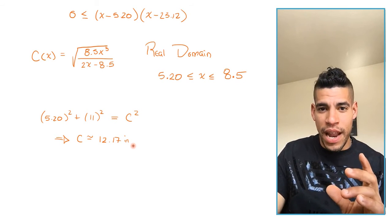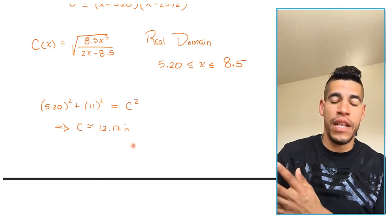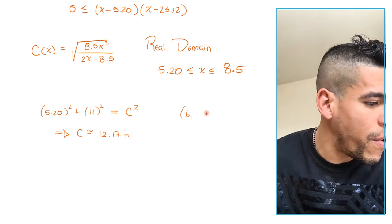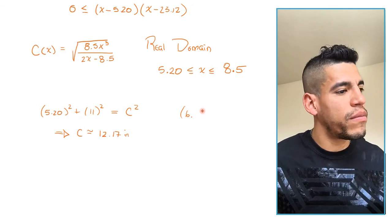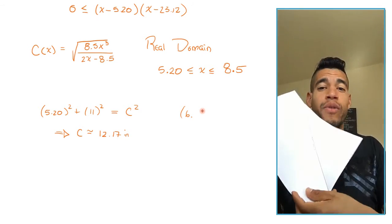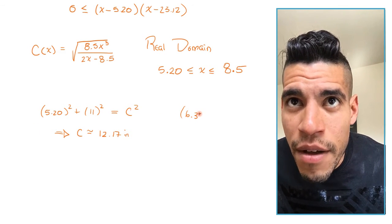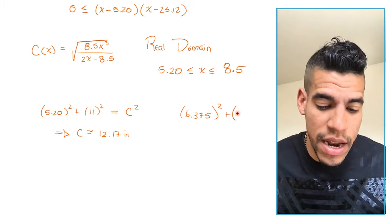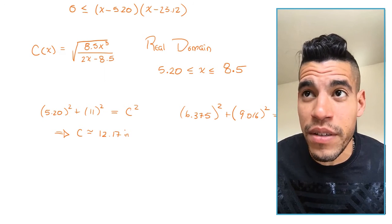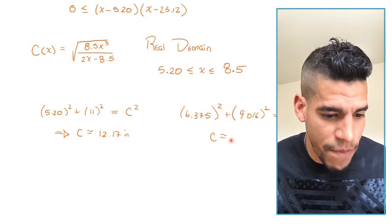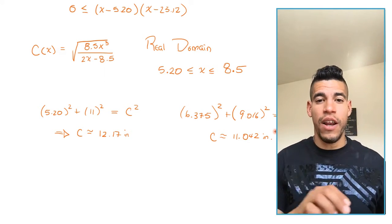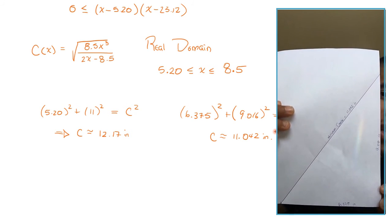The minimum length of the crease is the value found in Part 2 of the derivative video. Using the values from that calculation — with the x value of approximately 0.375 squared and y value of 9.016 — the minimum crease length is approximately 11.042 inches. That's the smallest crease you're going to have for a paper of this size.